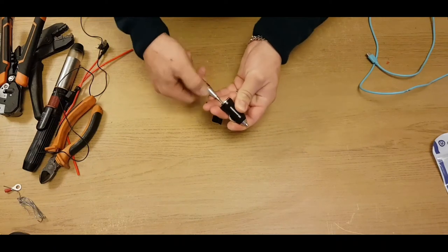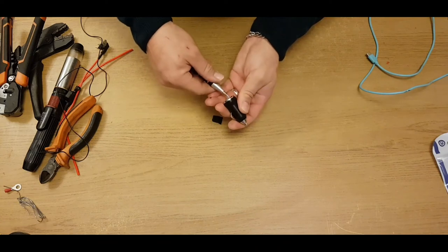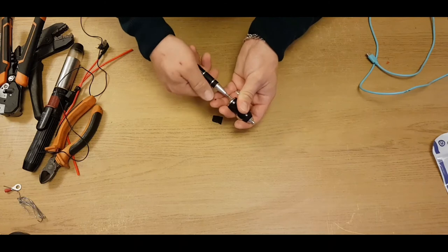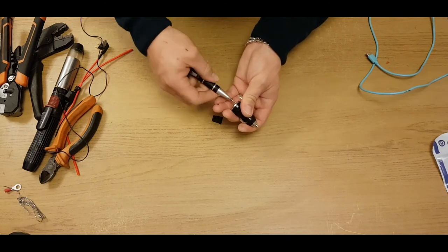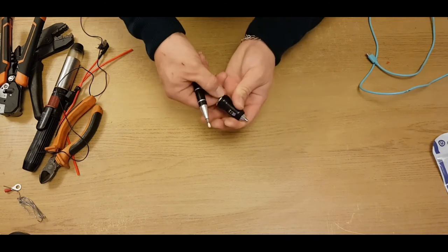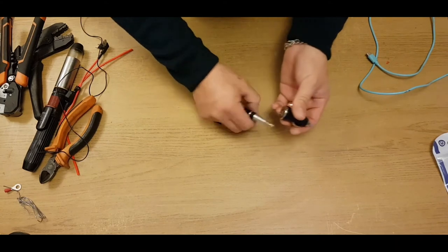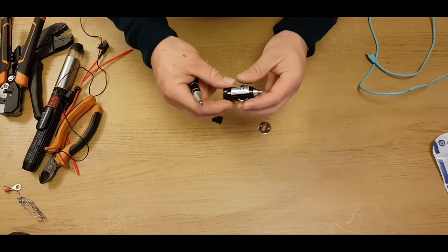So first thing you're going to do is we're going to strip this USB adapter down to its main components. All you're going to need for this video is one of these, a soldering iron. You can do this without a soldering iron but I'd recommend using a soldering iron.